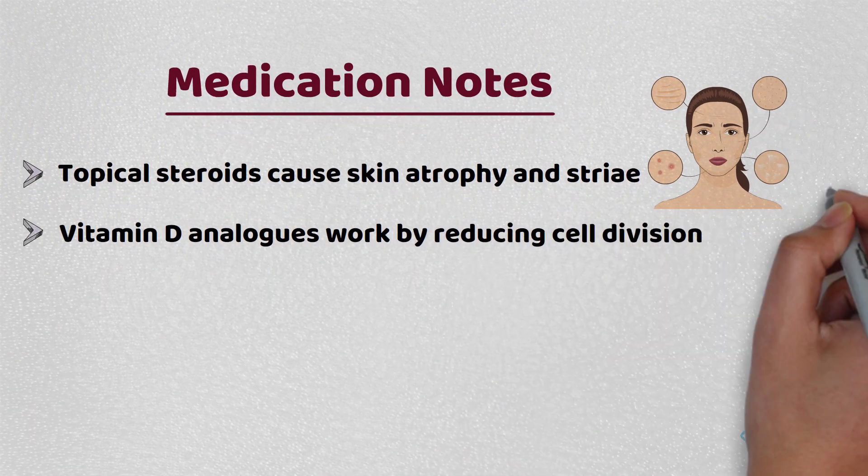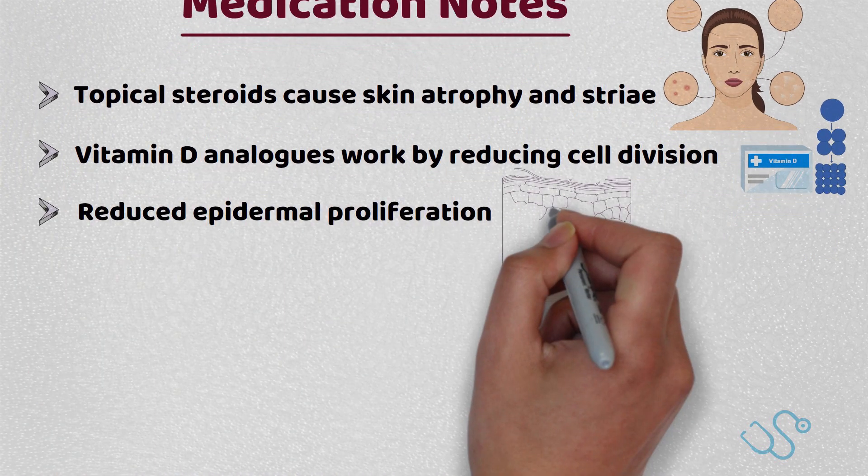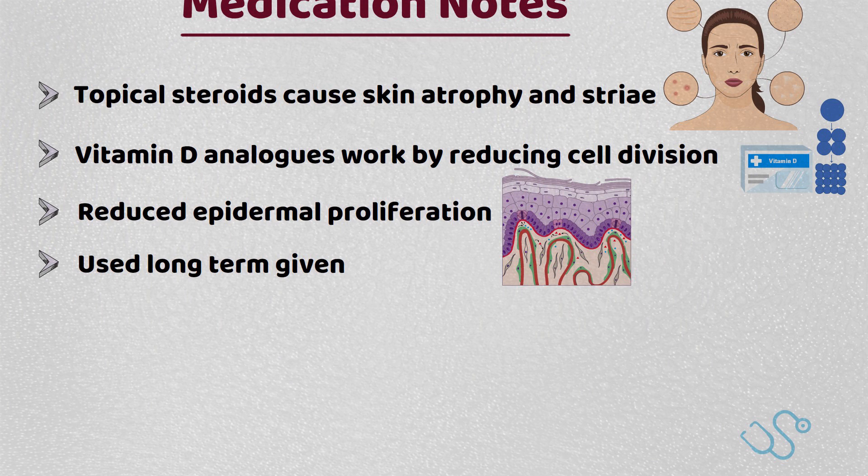Vitamin D analogues work by reducing cell division and therefore reduce epidermal proliferation. They can be used long term given the lack of side effects, but they should be avoided in pregnancy.